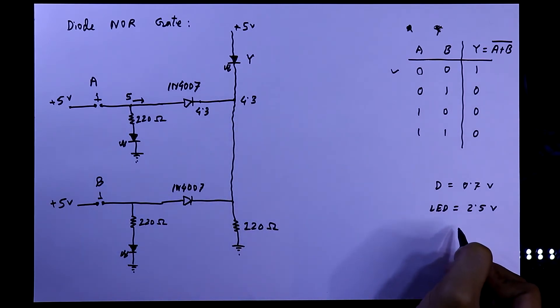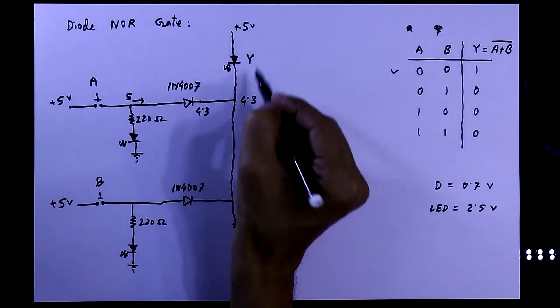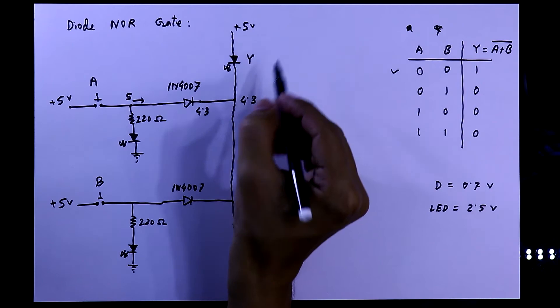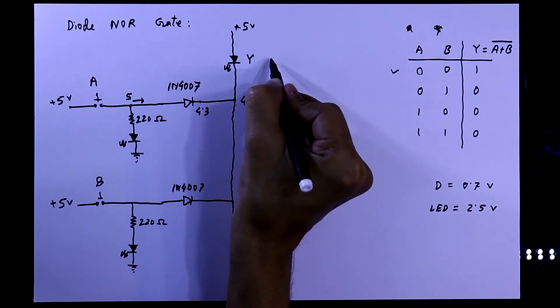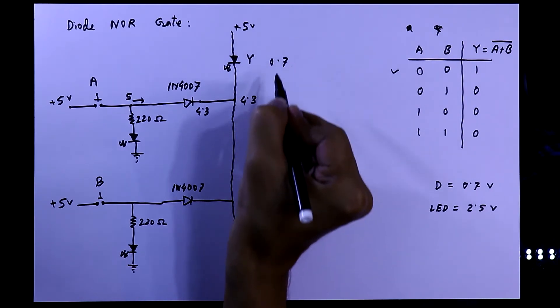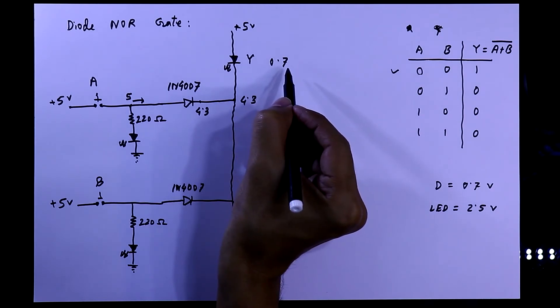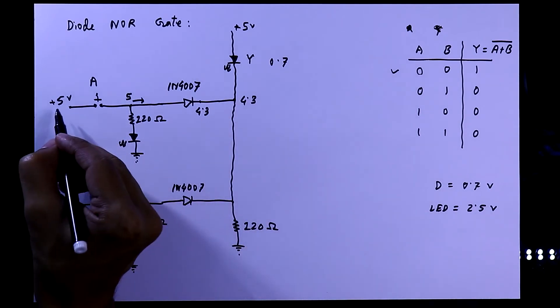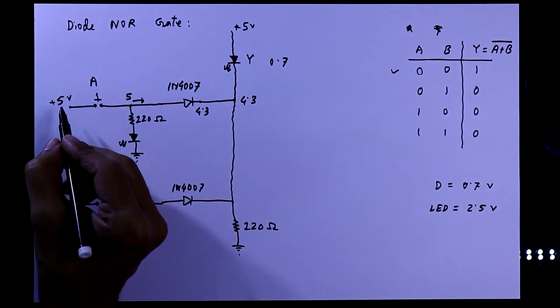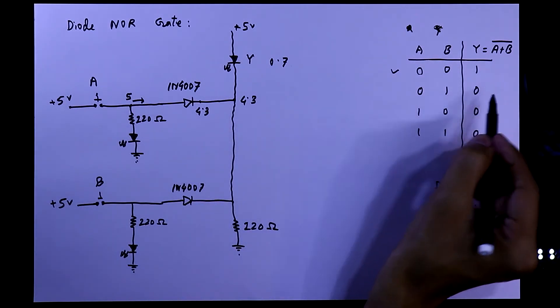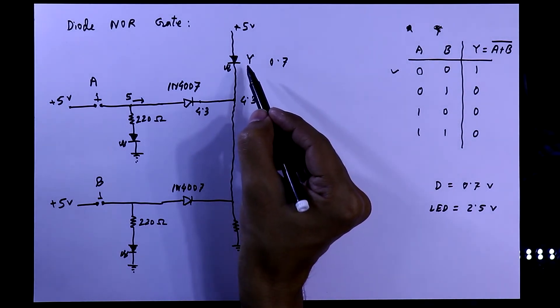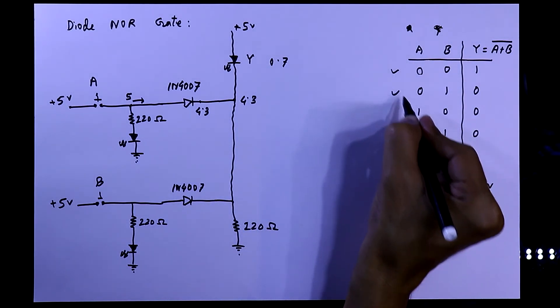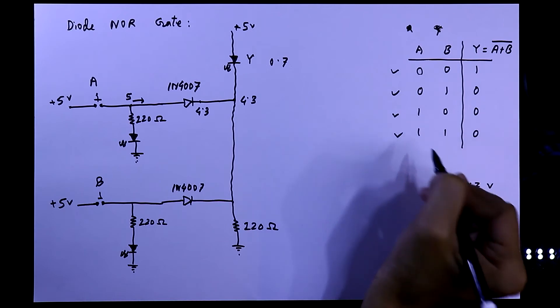And to glow the LED we should have a potential difference of at least 2.5V. But here the potential difference is 5 minus 4.3V it is 0.7V. So 0.7V cannot glow this LED. So this is why if anyone is on then this LED will be turned off. So this is how other 3 will be fulfilled.